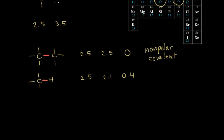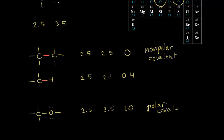Going back to carbon and oxygen: carbon has an electronegativity value of 2.5 and oxygen has 3.5, a difference of 1. That's enough to have a polar covalent bond. The electrons are pulled closer to oxygen, giving it a partial negative charge, and the carbon gets a partial positive charge. A difference of 1 is a polar covalent bond; a difference of 0.4 is nonpolar covalent.